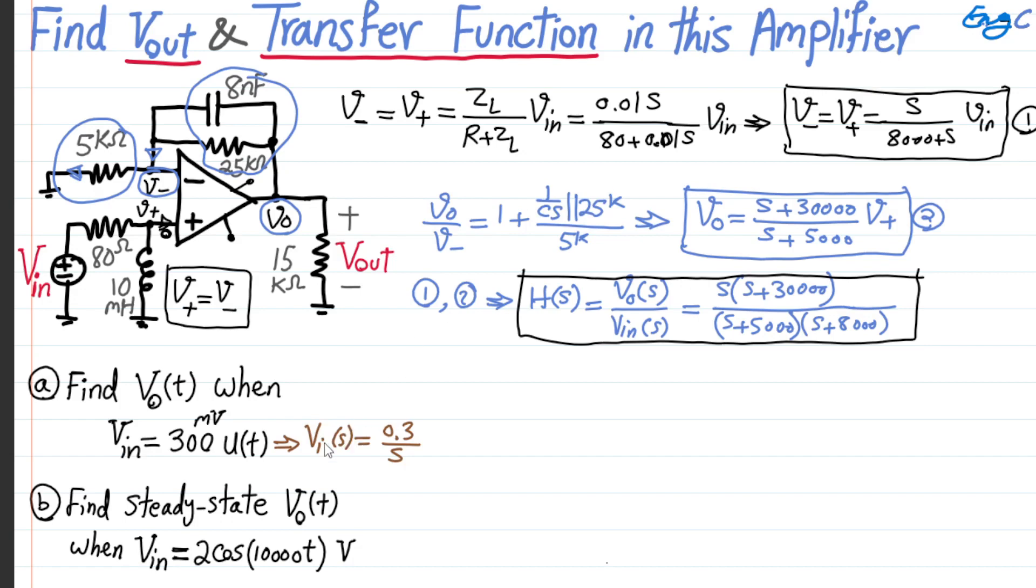Now what we need to do is we need to substitute this into the transfer function we found. So if we do that, what we get is, you multiply, to find Vout, we just say Vout S is transfer function times Vin S. And of course, Vin S is 0.3 divided by S. That S will cancel out this S in numerator of transfer function. Therefore, as a result, what I get is S plus 30,000 divided by S plus 5,000, S plus 5,000 times S plus 8,000.